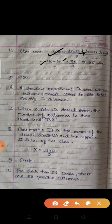So 40 plus 30 upon 2, 70 upon 2 is 35. So this is the formula of class mark.